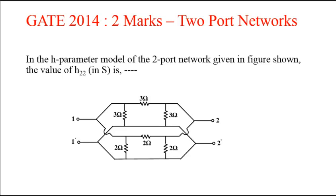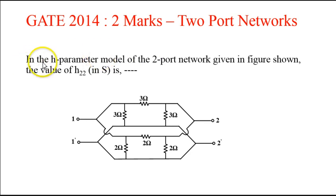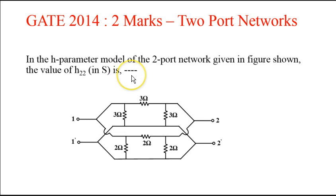The present problem is the fourth and last problem in two port networks, and it's a very good problem. It appeared in GATE 2014 and is worth two marks. We will state the problem: in the H parameter model of the two port network given in the figure, the value of H22 in Siemens is to be found. In this problem, the options are not given — you have to find the value of H22 in Siemens.